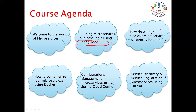We'll cover how to size microservice boundaries, how to containerize microservices using Docker, and configuration management using Spring Cloud libraries for centralized configuration across all your microservices for prod, dev, and QA environments. We'll also cover service discovery and registration — in a microservices architectural flow with many services, how they locate each other and track health.